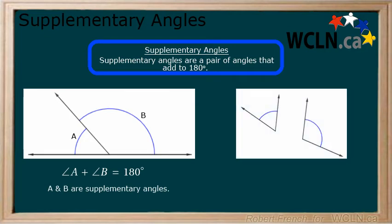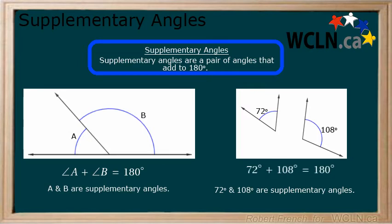Here, there are another two angles. One is 72 degrees and the other is 108 degrees. Even though these two angles are not connected, they are supplementary angles. This is because when we add 72 and 108 together, we get 180.